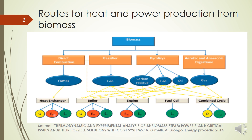That heat can be further used for power production through a proper cycle. Alternatively, we can gasify the biomass and that syngas or producer gas can be used in a boiler for heat and steam turbine, or we can run the producer gas in an IC engine coupled with a generator to get electrical output. We can also use the producer gas in a fuel cell, which will directly convert it into electricity. A combined cycle can also be used. Similarly, pyrolysis gives biochar which can be used as fuel in a boiler, or the oil and gas from pyrolysis can be used in these different modes.